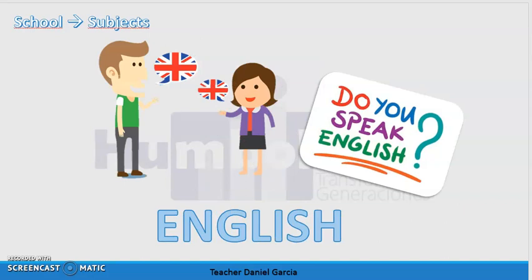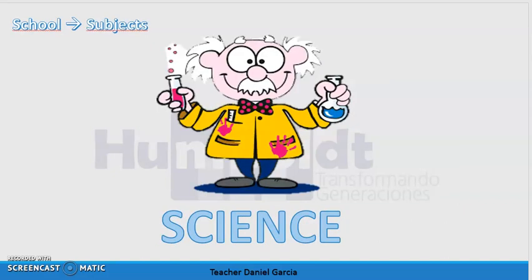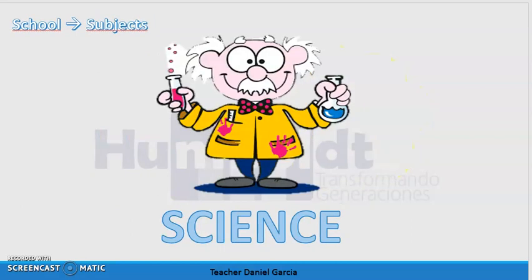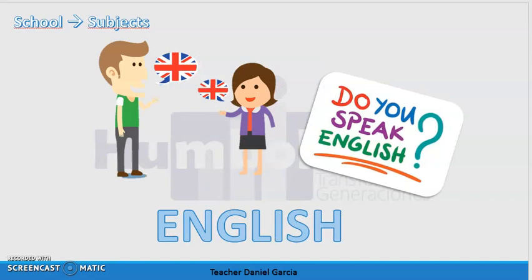The next one is English. Going back to spellings: math is m-a-t-h. Science is s-c-i-e-n-c-e. English is e-n-g-l-i-s-h.